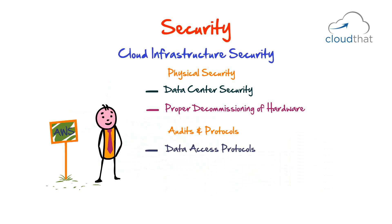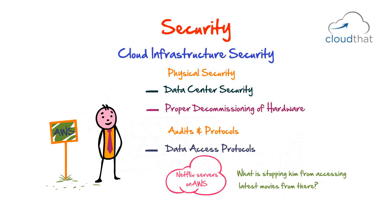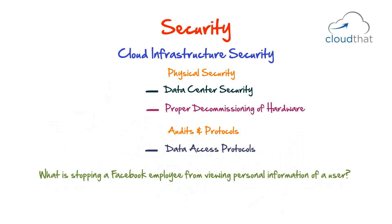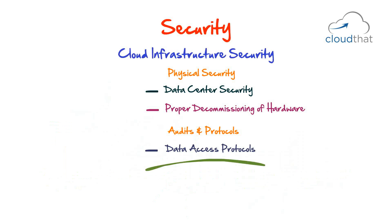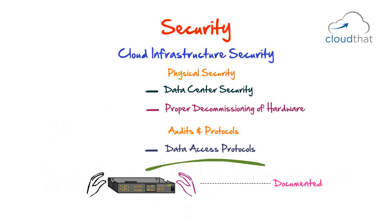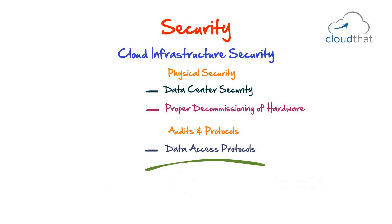Consider: an AWS engineer knows all Netflix servers are on AWS — what stops him from accessing their latest movies? What stops a Facebook employee from viewing personal information of users? Data access protocols are what stops them. Any access to servers is documented with reasons for access; companies log all server access and require proper documentation for any employee who needs to access that infrastructure.